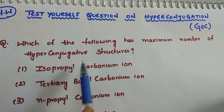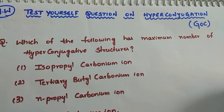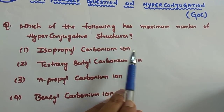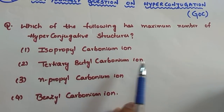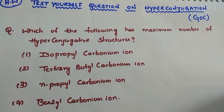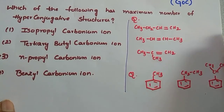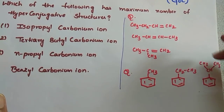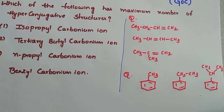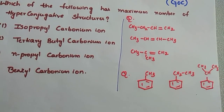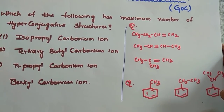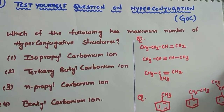Now a test-yourself question: which of the following has the maximum number of hyperconjugative structures? Options: isopropyl carbonium ion, tertiary butyl carbonium ion, n-propyl carbonium ion, and benzyl carbonium ion. I am giving more questions because this topic is very important. Try this and also give me the stability order. You may make mistakes, so do it carefully — I am going to give the solution in the description box. Thanks for watching.